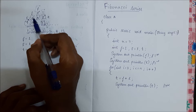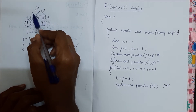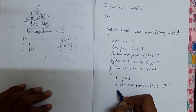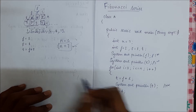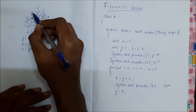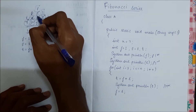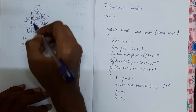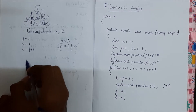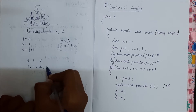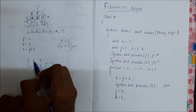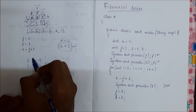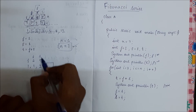Now we make our second term the new first term: f equals s. Then we make the third term the new second term: s equals t. To find the next term, we add the current first and second. So f equals s brings the old second here, and s equals t brings the old third here.